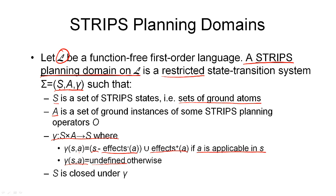There is no resulting state if we try to apply an action that is not applicable. This definition of a state transition function is what we've seen before for the STRIPS actions defined earlier. Finally, the set S is closed under gamma, which means there are no states in S that cannot be reached through the state transition function. So that defines a STRIPS planning domain.